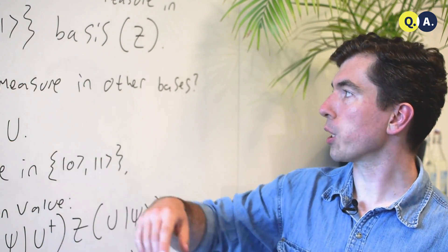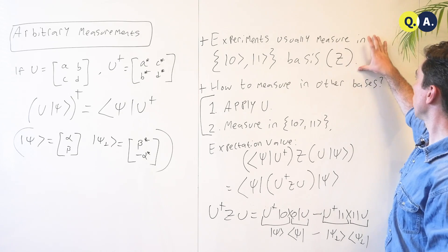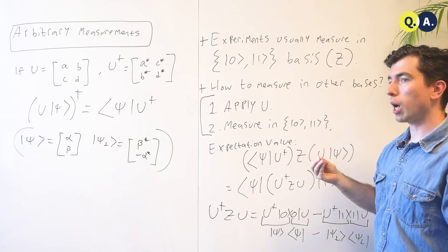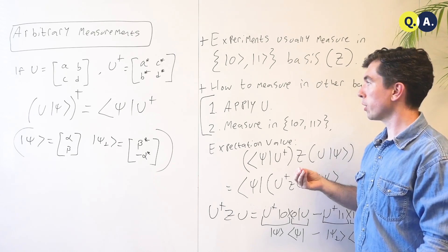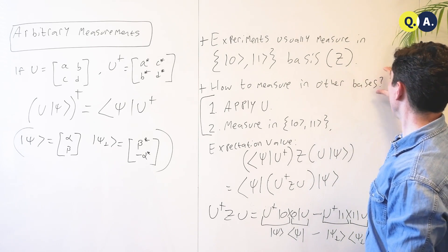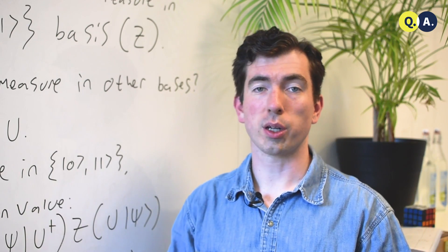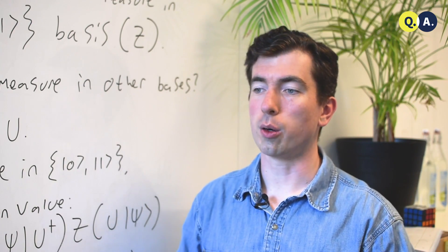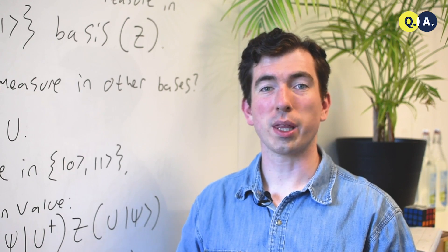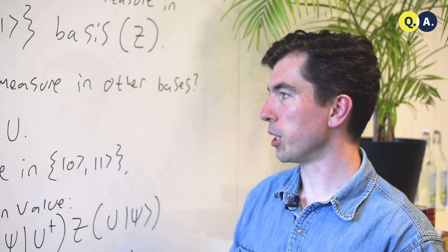With those three ingredients, we can solve this question. Experimentalists usually measure a single operator — the Pauli Z operator — but we'd like to be able to measure in whatever basis we want, so that if we have a question like 'is the state this or that,' we can answer it without having to restrict ourselves to the zero-one basis.